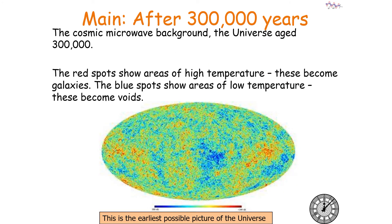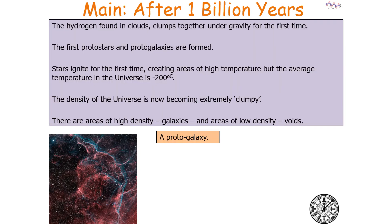Here is an image of the cosmic microwave background when the universe was 300,000 years old. The red spots show areas of high density and temperature which become galaxies, and blue spots show areas of low density and temperature which become voids. After 1 billion years, hydrogen found in clouds clumps together under gravity, giving us the first protostars and protogalaxies. The stars ignite for the first time, creating areas of high temperature, but the average temperature in the universe is now minus 200 degrees Celsius, as our universe has become extremely clumpy.